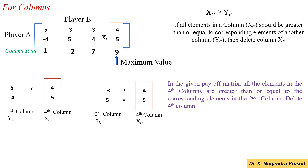Here, 4 is greater than minus 3 and 5 equals 5. So, the condition is satisfied. In the given payoff matrix, all the elements in the 4th column are greater than or equal to the corresponding elements in the 2nd column. Then, we have to delete the 4th column.